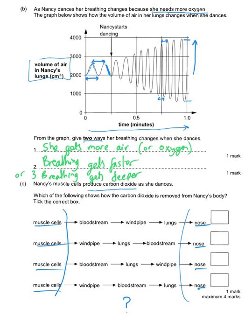Notice they all end in nose so she's breathing out through her nose and they all begin with the muscle cells that have made the carbon dioxide as they've respired, so the big question mark is where do we go from here? The muscle cells produce the carbon dioxide and it goes on a journey. It has to go into the blood. It can't go straight from the muscles to the windpipe. So it must go into the blood and then from the blood it needs to get out and the gateway to getting in and out of the blood is the lungs. So the lungs would be next. The lungs has got to be before the windpipe because your windpipe is what connects your lungs to your mouth and your nose. The correct answer has got to be the third one down.